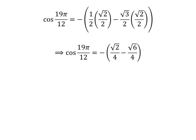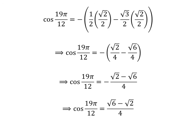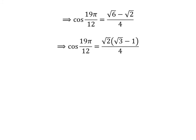Straight multiplication gives us cosine of 19 times pi upon 12 is equal to minus of square root of 2 upon 4 minus square root of 6 upon 4. As the denominator of both fractions is the same, cosine of 19π/12 is equal to minus of square root of 2 minus square root of 6 upon 4. Distributing the minus into the numerator gives us cosine of 19π/12 is equal to square root of 6 minus square root of 2 upon 4. Taking out the common factor square root of 2 in the numerator gives us cosine of 19π/12 is equal to square root of 2 times open bracket square root of 3 minus 1 close bracket upon 4.